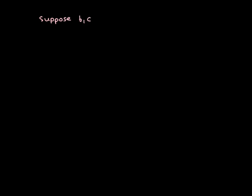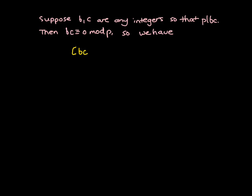So suppose b and c are any integers so that p divides bc. Since p divides bc, we can say that bc is congruent to 0 mod p. So we have the product bc is equal to bc, which is equal to 0 mod p.